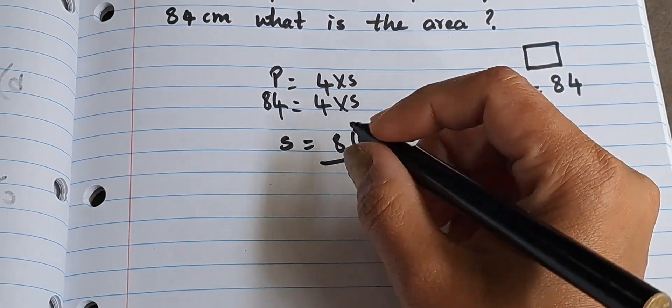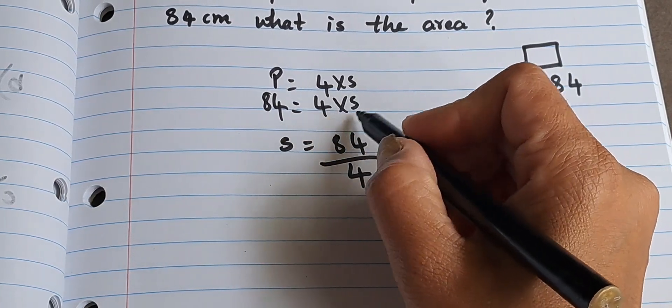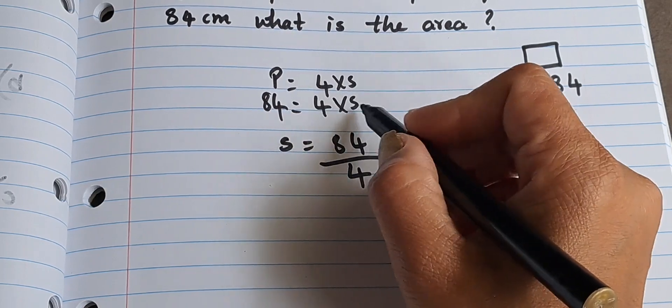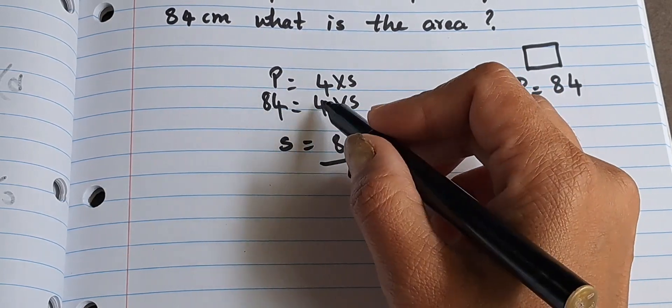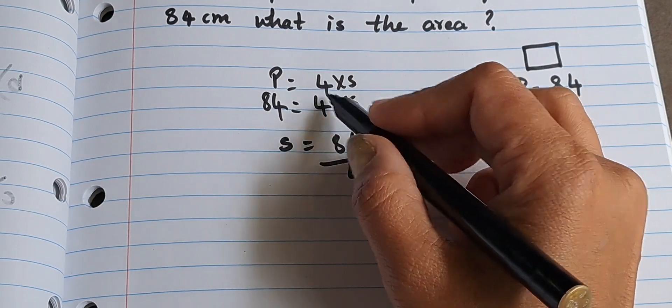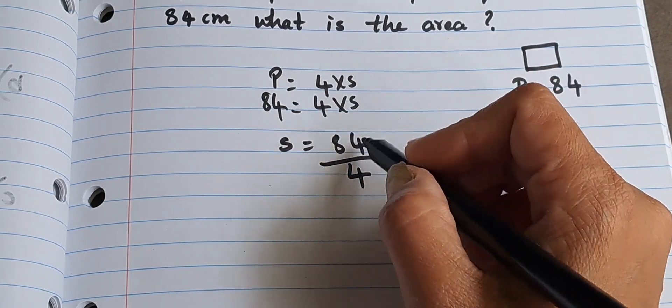Because if we are finding s, 4 is multiplied with s, and if it goes on this side, if it goes to the left hand side, multiplication becomes division. So we are dividing 84 by 4.